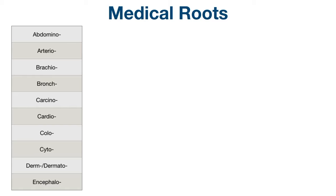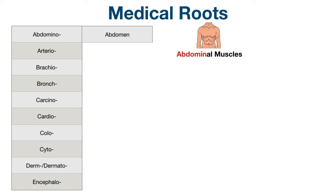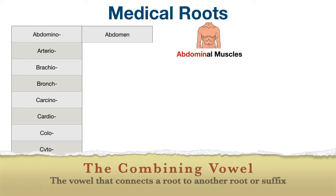Starting with abdominal, this means abdomen. It's easy to remember — just think of abdominal muscles, and this will help you remember that abdominal refers to abdomen. As we go through the roots, you'll see most of them are listed in the table as ending in the letter O. This is to simplify the pronunciation, but just know that there might be a different vowel other than O that follows the root.